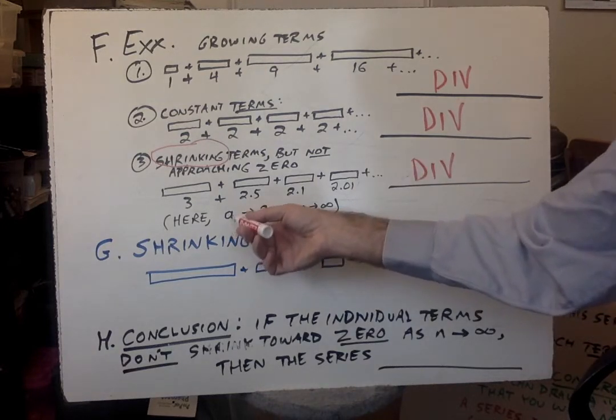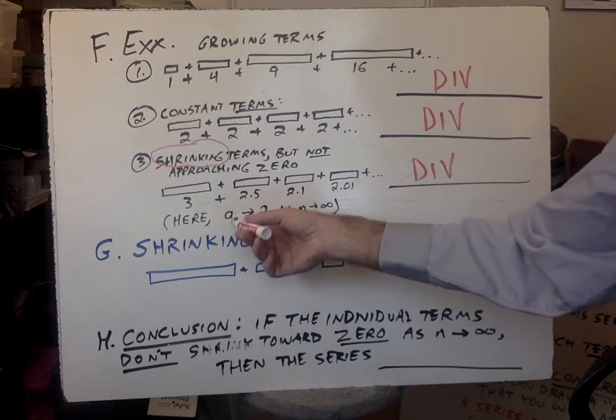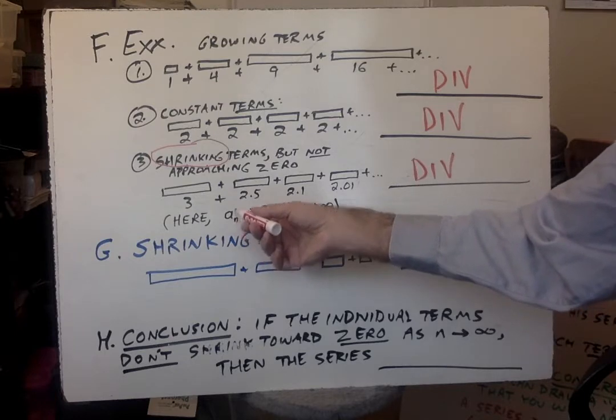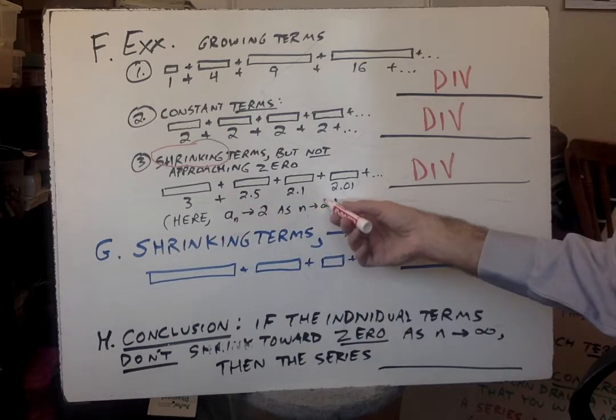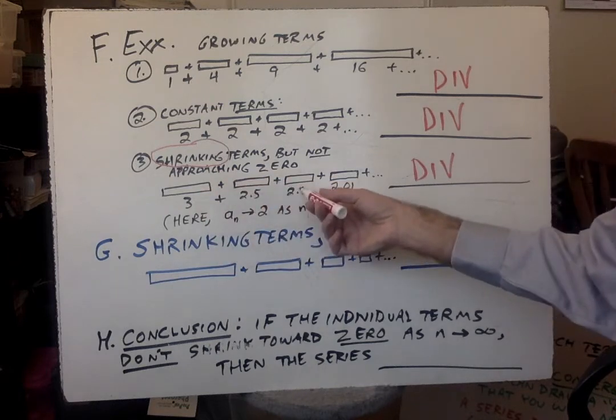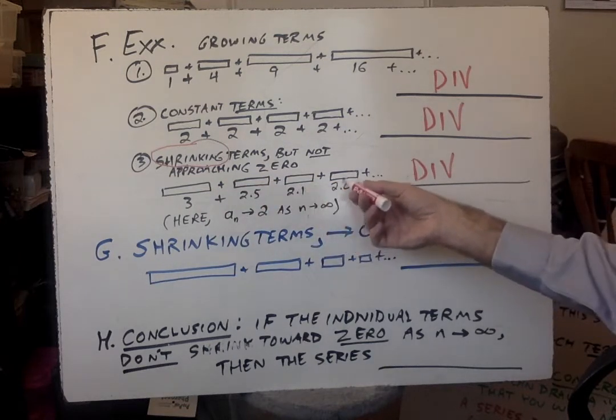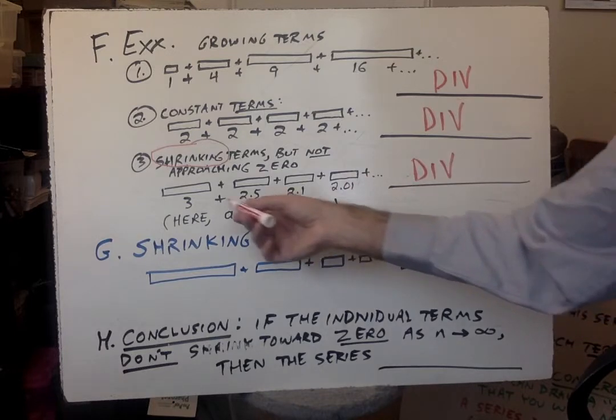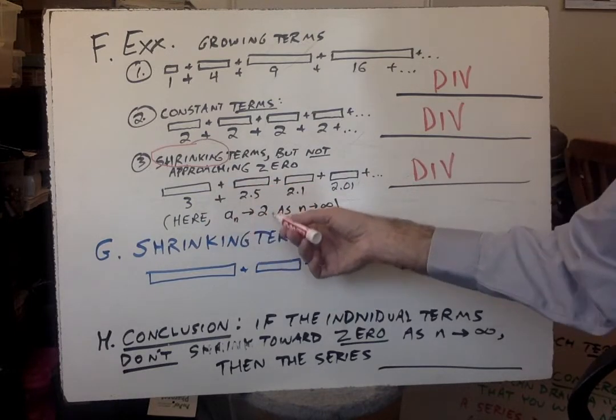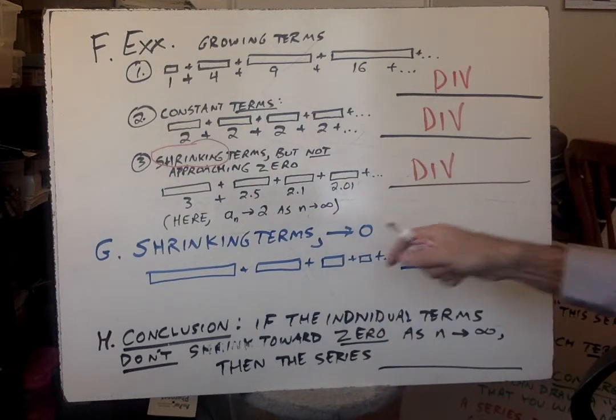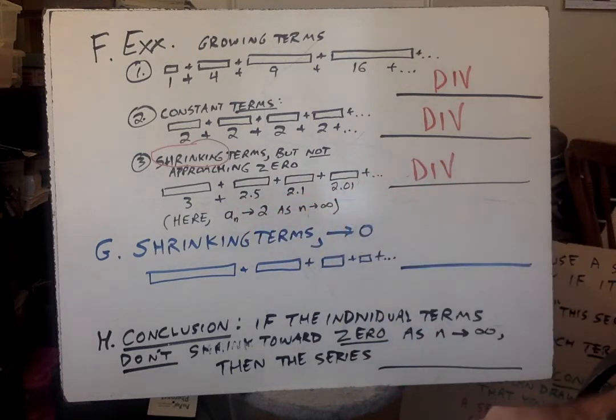And here's the notation for you. The individual term, see that's not a series, there's no sigma, that does not mean series. That means the individual term, the nth term. That approaches two as n gets bigger and bigger. Three, 2.5. Here's the first term, the second term, the n equals three term, the n equals four term. And as n gets bigger and bigger, the individual terms approach two. See how that's all different from talking about the series as a whole or the sum. We're talking about the individual terms.